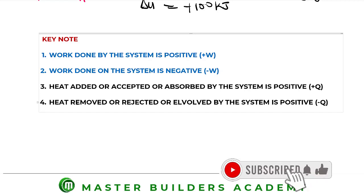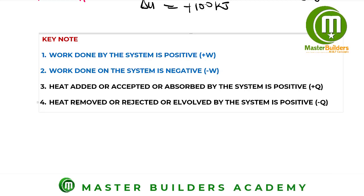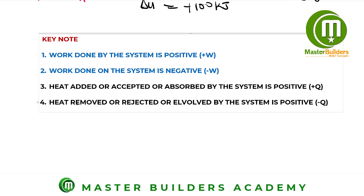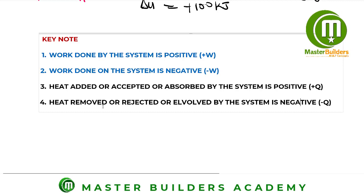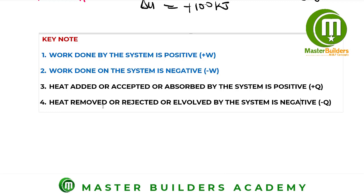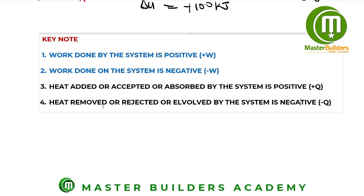Key note four: when heat is rejected, removed, or lost by the system, it is taken as negative. Regardless of the wording used — rejected, removed, separated, or lost — as long as the system is losing heat, that heat is assigned a negative value.